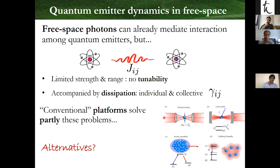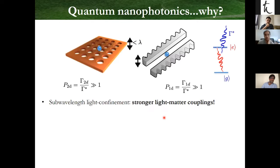This is why in the last few years we and many people have been thinking of alternatives. One alternative is to put emitters — initially we thought about atomic physics — close to nanophotonic structures, but it can be any type of emitter close to dielectric photonic crystal structures.